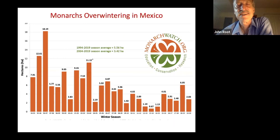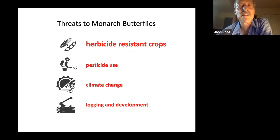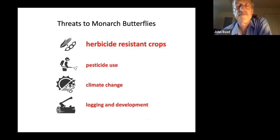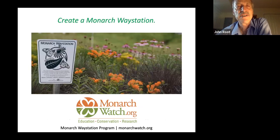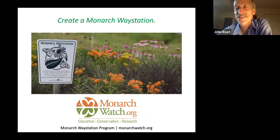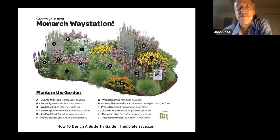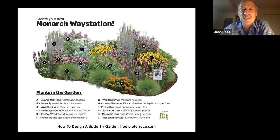Monarchs are in trouble — the numbers are way down. Monarchwatch.org is the place to go to find out about efforts to help them. It's the glyphosate being applied to GMO crops that is killing all the milkweed and reducing the numbers of monarchs. You can establish a monarch waystation and order one of these signs from monarchwatch.org to proudly proclaim to the world that you're part of the effort to help them survive. Here is an example of a monarch waystation garden that you could install — visit edibleterrace.com to learn more. Notice that two of these 12 plants are actually grasses, and each species is planted in clusters so butterflies won't have to travel far from flower to flower.